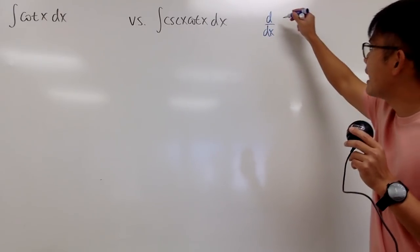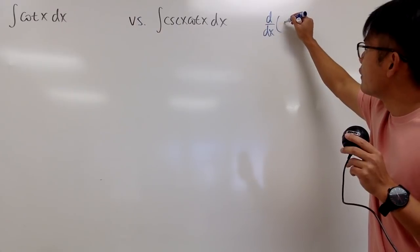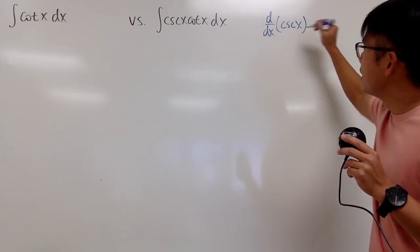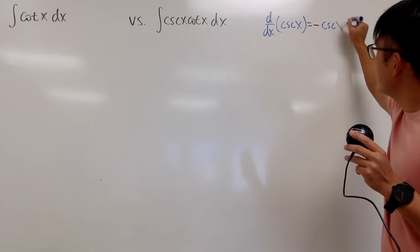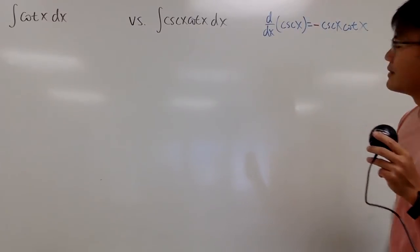And the answer to the following is that we need to know the derivative of cosecant x. This right here gives us negative cosecant x cotangent x, right?